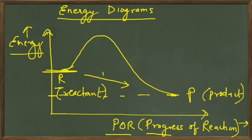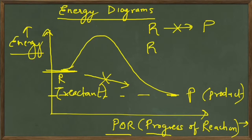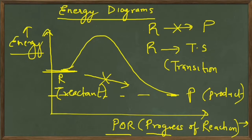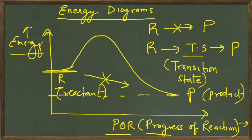So why do we not go from reactant to product directly? Because in organic chemistry, reactions do not happen from reactant to product directly. What happens is that the reactant first changes into what we call a transition state — T.S. is the short form for transition state — which is of very high energy, and then it gets converted to product.